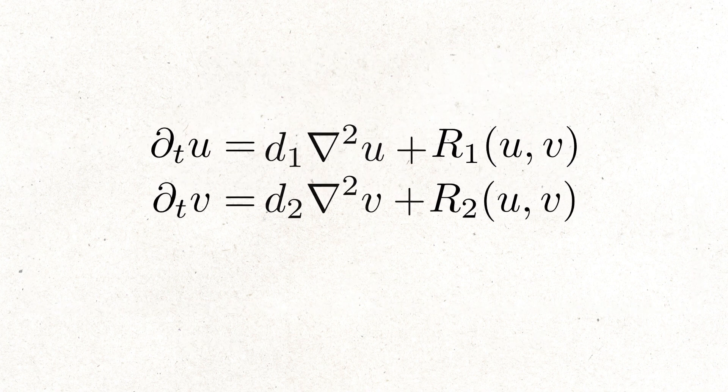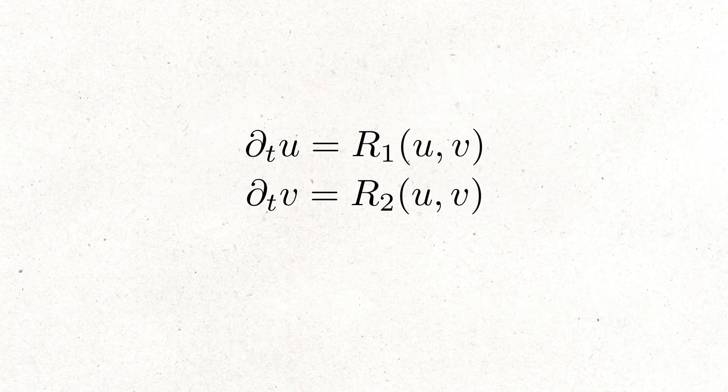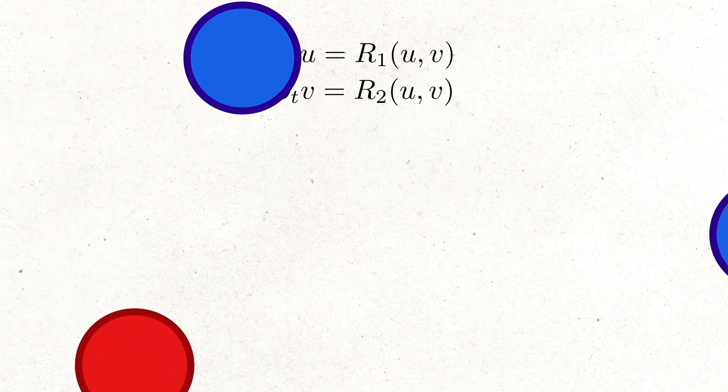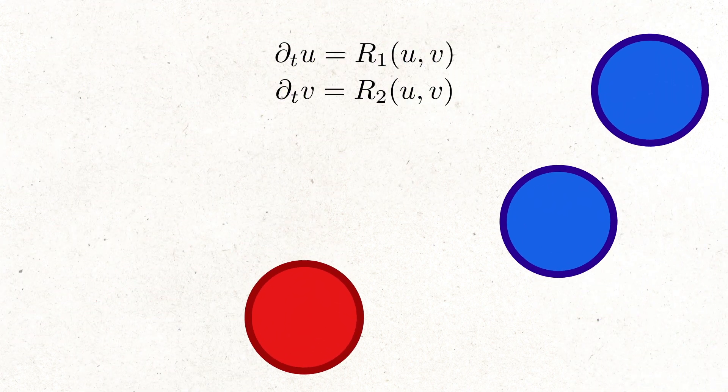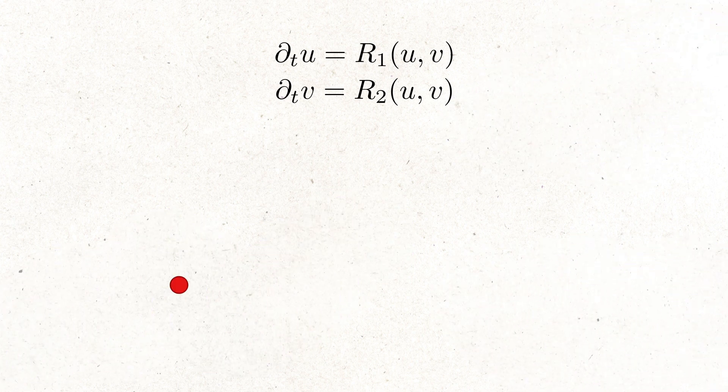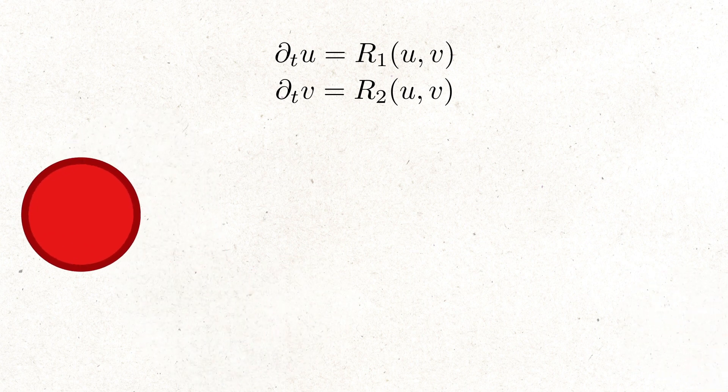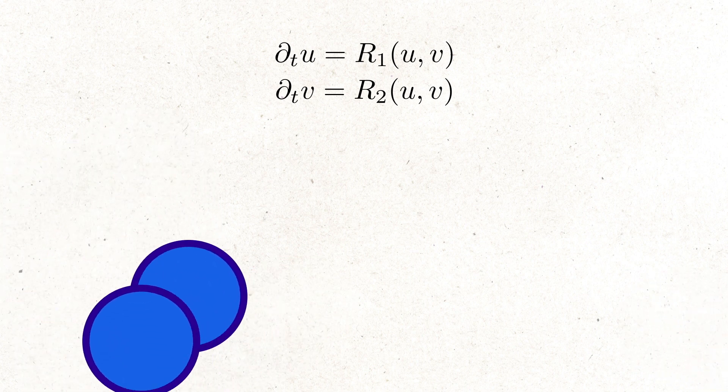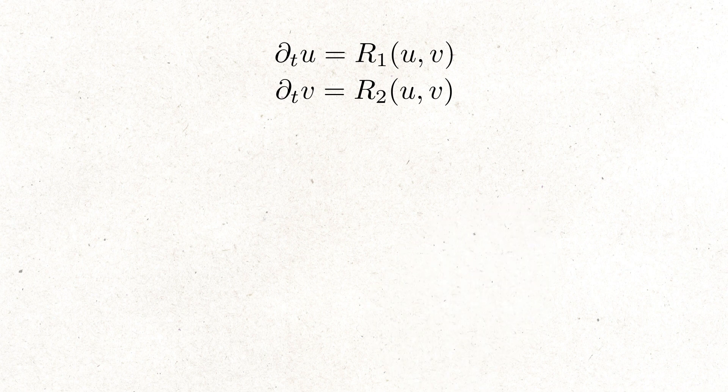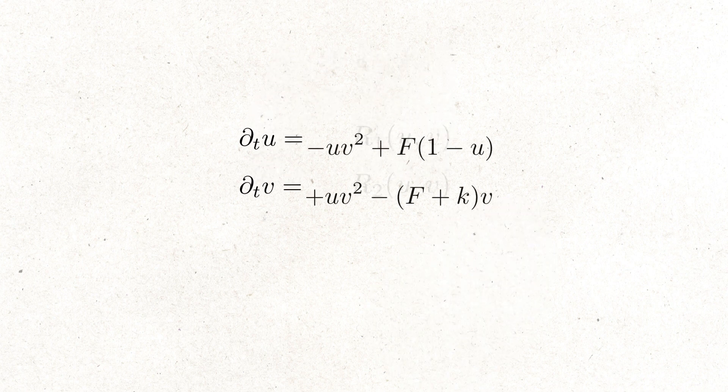Let's for a moment forget about diffusion and only focus on reaction equation. Suppose we have this reaction. Substance U turns into substance V if it meets two molecules of substance V. Substance U is continuously added at uniform feeding rate. A fraction of substance V continuously disappears at uniform killing rate. This can be explained with these two equations.